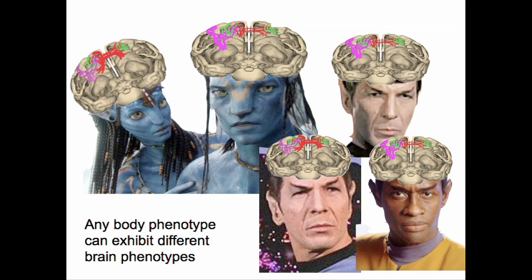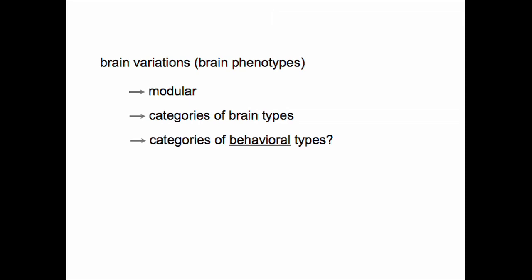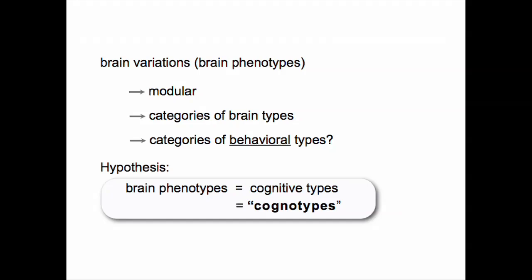That means brains will fall into certain categories. Body phenotypes are completely uncoupled from brain phenotypes, so pretty much any body phenotype can exhibit any of these different brain phenotypes. Brain variations — brain phenotypes — are modular, and therefore give rise to categories of brain types. Your brain is the thing that gives you your cognition, your behaviors, your personality. So will we see certain categories of behavioral types? The hypothesis we're putting forward is yes: brain phenotypes give rise, in many cases, to different cognitive types. Just like genotypes and phenotypes, we're going to coin a term for this — cognotypes.